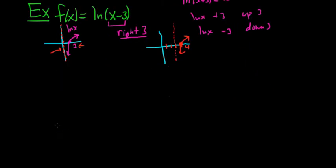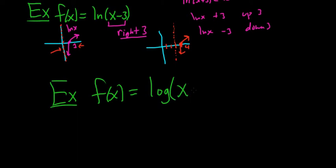So how about f of x equals log of x plus 2. This time the base is 10, and this time you're adding 2 to the x. So it's backwards, so it's left 2.